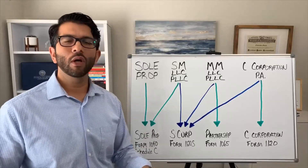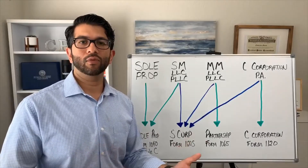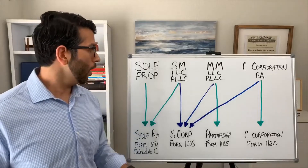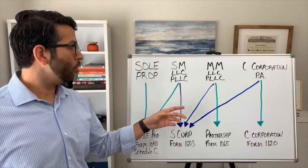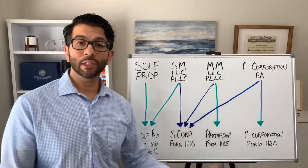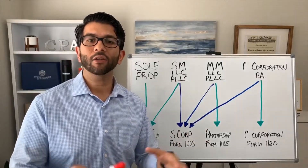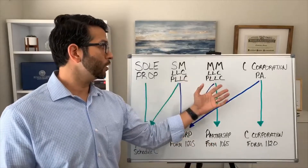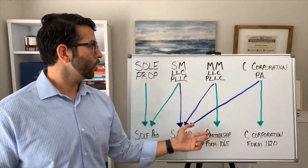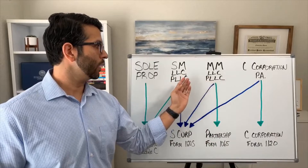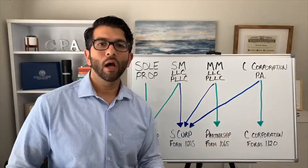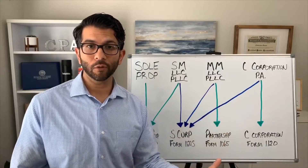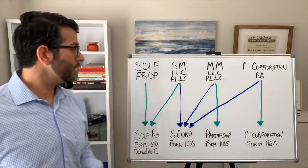What I mean by default is there's no box that says check here to be treated this way from a tax perspective. The blue represents how that entity type could be treated from a tax perspective — I'll get into those details in a second. There are some less common structures I didn't put on here, and you could also have an LLC treated as a C corp, but that's not very common. This video is for your average small business owner.